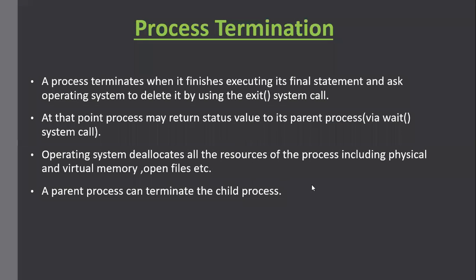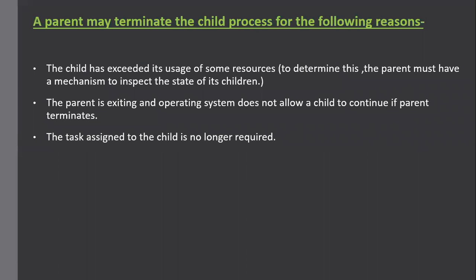A parent process can terminate its child process, but no other process can terminate any process unless it is the parent of that process. A parent may terminate a child process for several reasons. For example, if the child has exceeded its usage of some resources, the parent may terminate it. For determining this, the parent must have a mechanism to inspect the state of its children and know that the child has exceeded the resource limit.